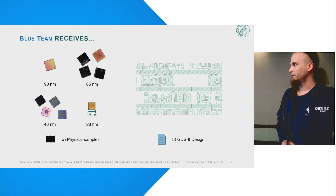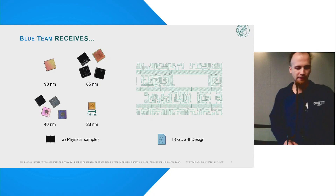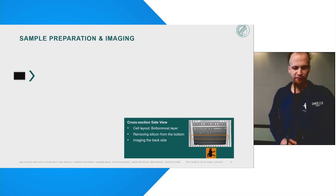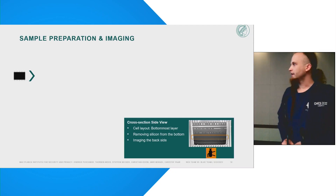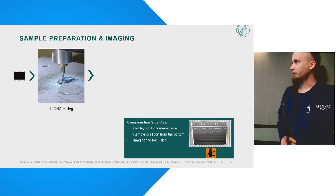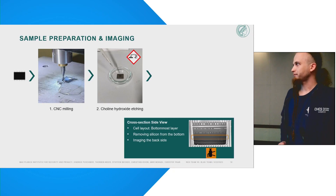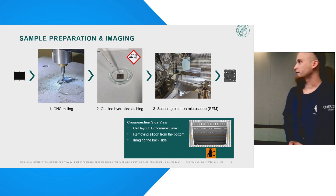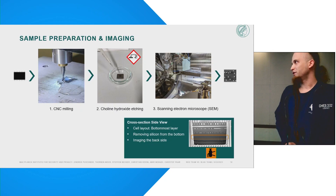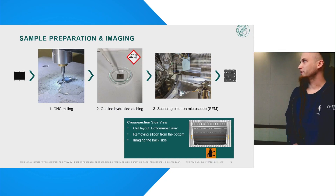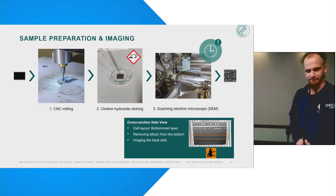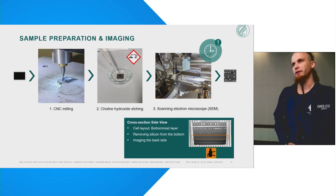The blue team receives the physical chips and the design files from the red team and now needs to somehow verify the consistency. For that, first the chips need to be imaged. For imaging, they need to be prepared beforehand. As we are interested in the cell layout of the chip, which can be found on the bottom-most layer, we start by milling down some silicon from the back side of the IC. Then any remaining silicon is etched away. In the third step, with a scanning electron microscope, the chips can be imaged, resulting in full images of the chip. This is, however, a time-consuming and expensive process — it can easily take one to two days to image one of our research ICs.